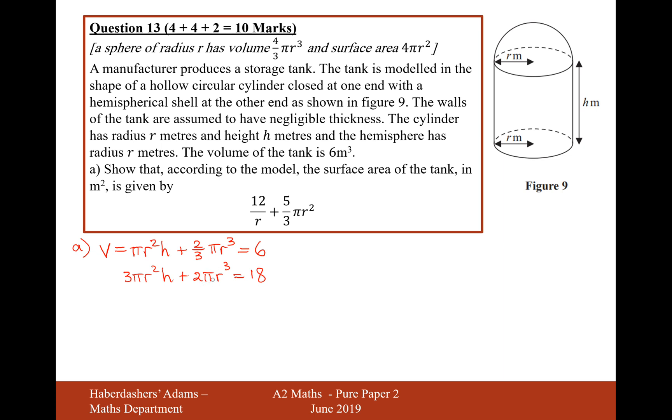And then I'll move this 2 pi r cubed onto the other side. So it's 3 pi r squared h equals 18 minus 2 pi r cubed. And then I'm going to divide by 3 r squared pi.